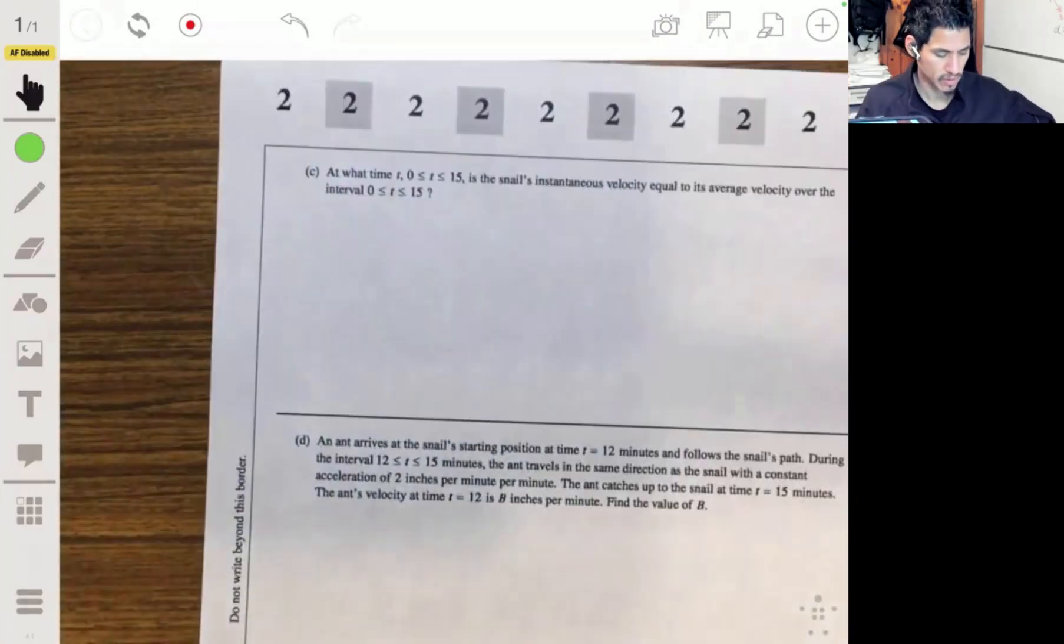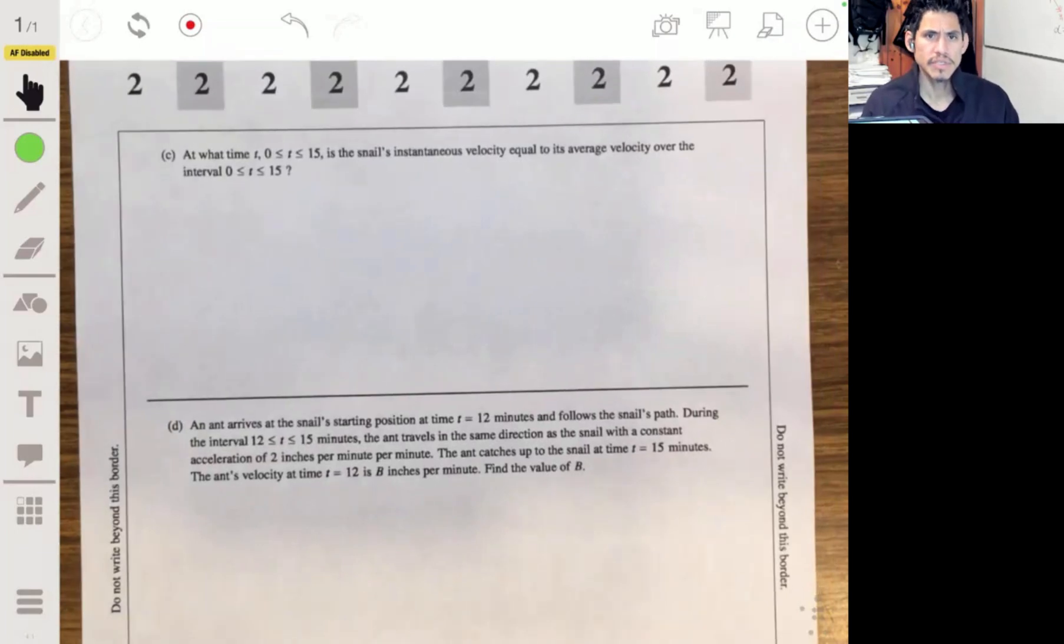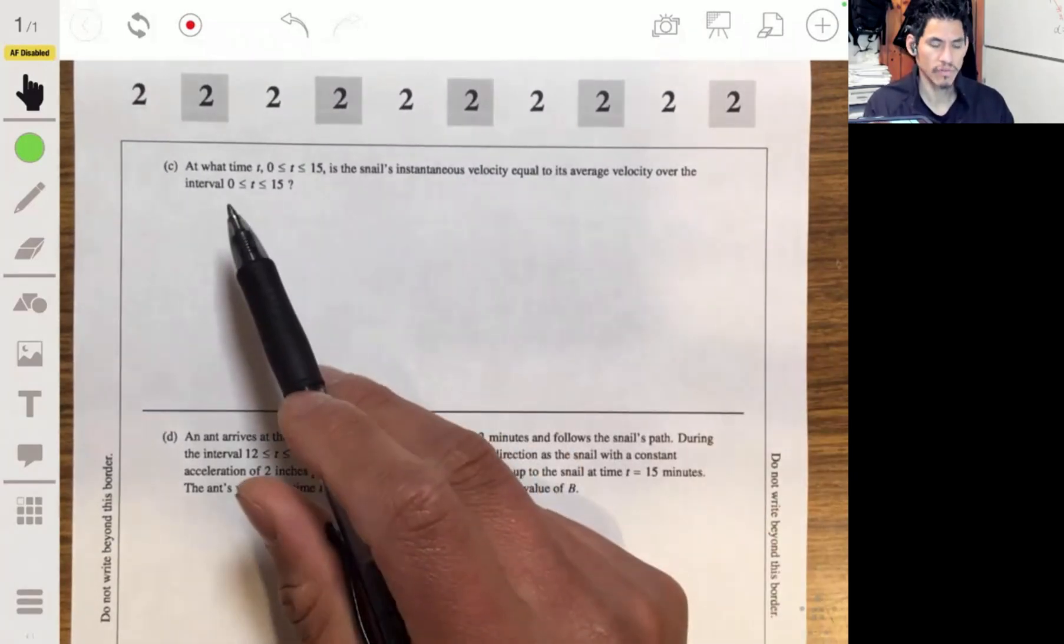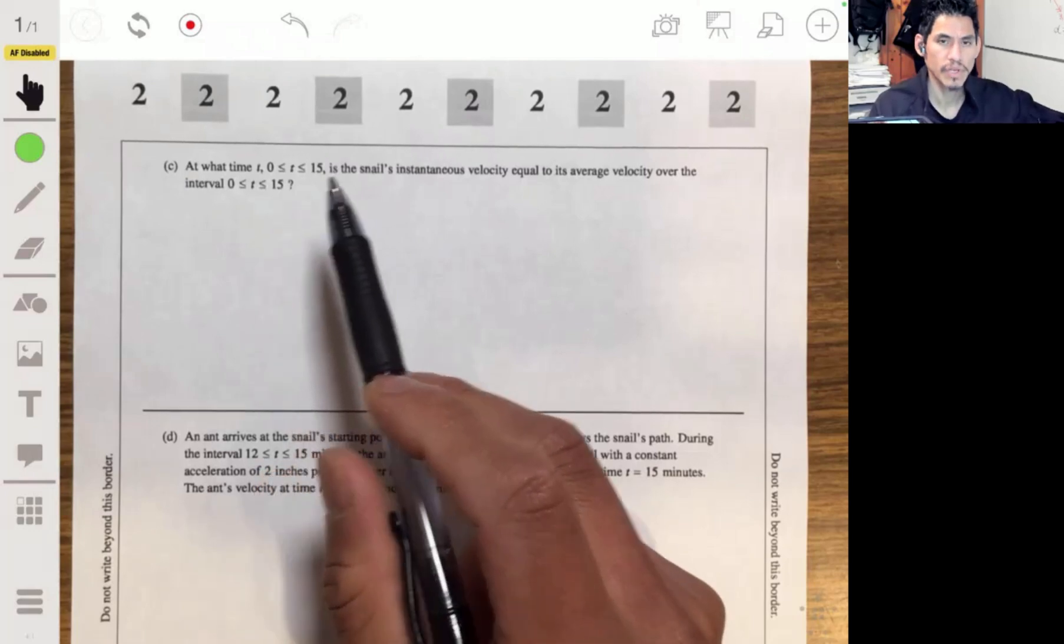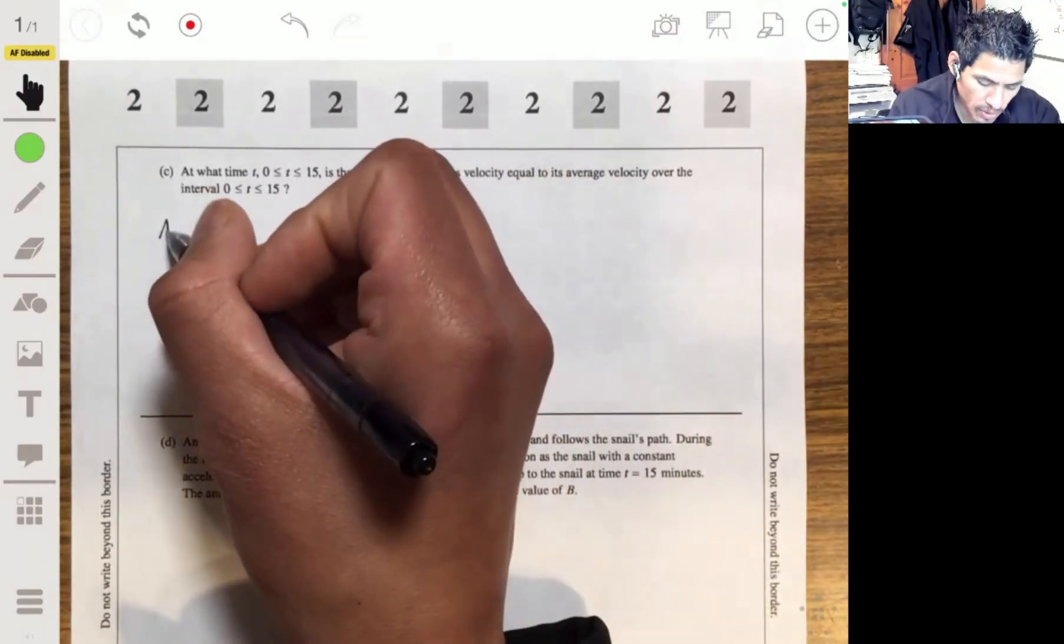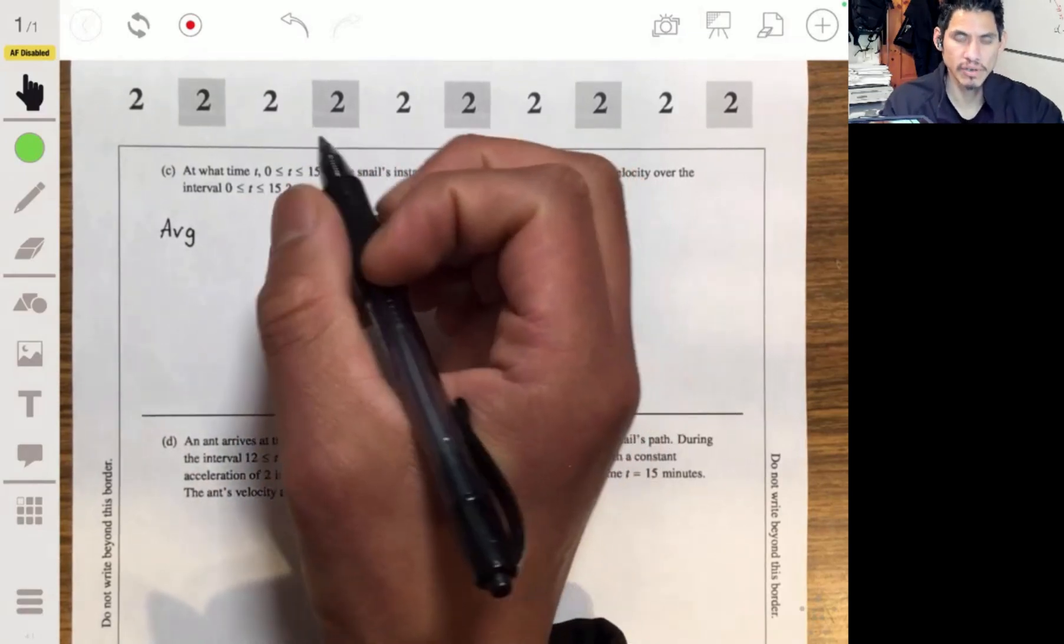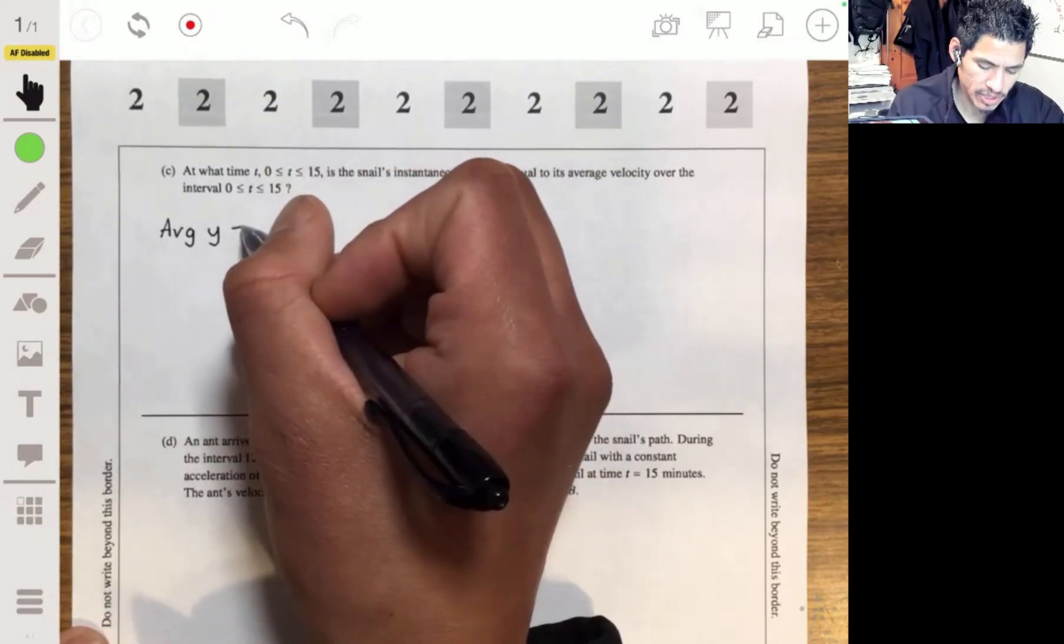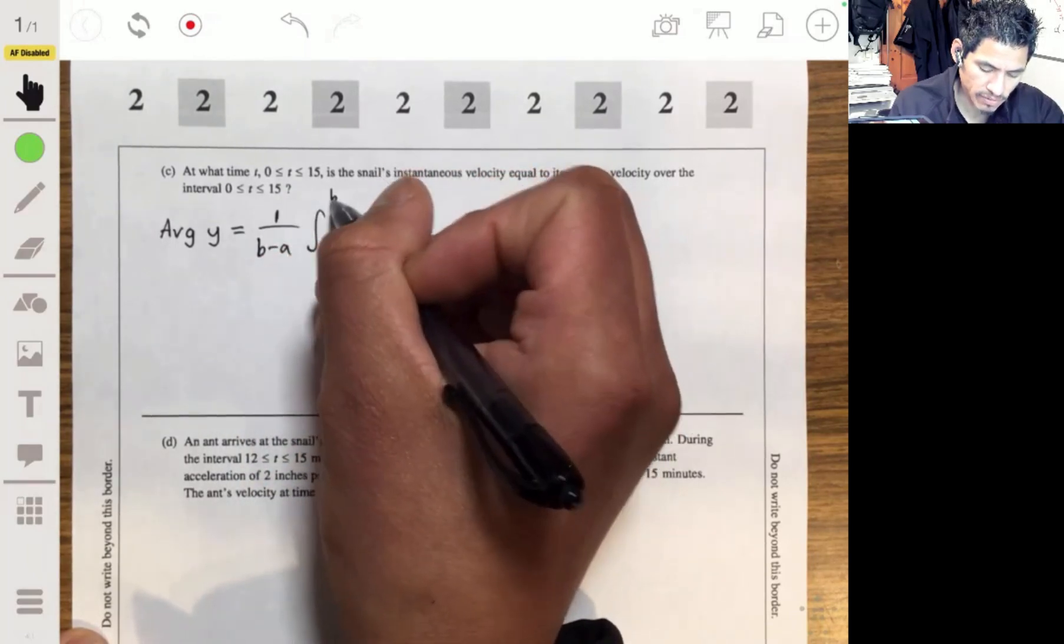At part C, at what time t does the snail's instantaneous velocity equal its average velocity over the interval from 0 to 15? Let's remember that average velocity, if you remember this chapter from calculus, the average y value will be equal to 1 over (b - a) times the integral from a to b of the function.